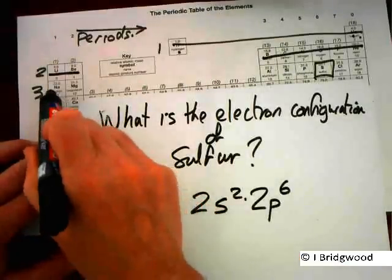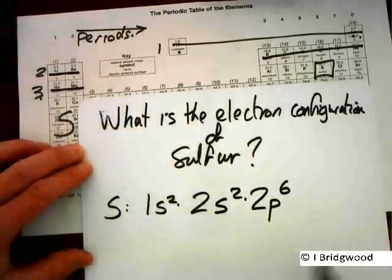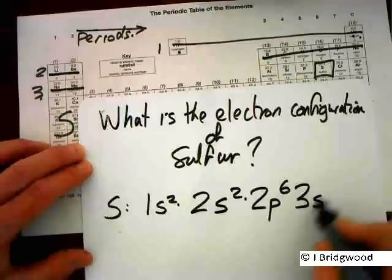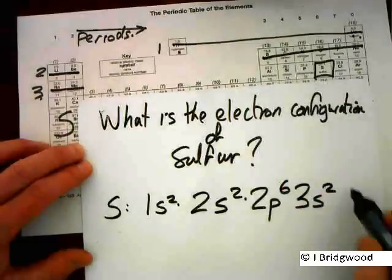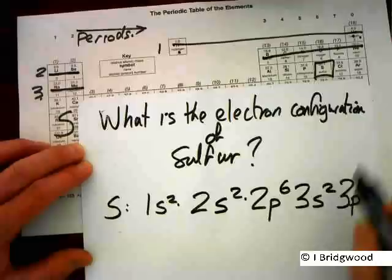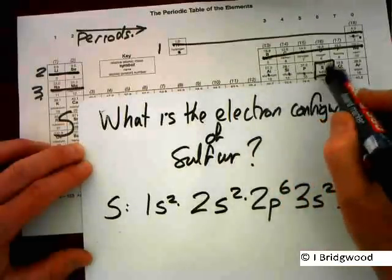On to the third period, through sodium and magnesium, S block, 3S2. And count for the 3P: one, two, three, four.